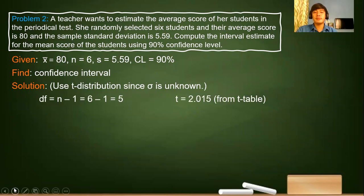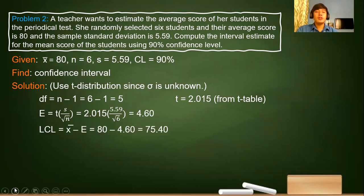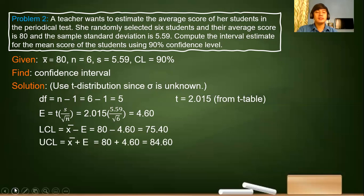For the given: point estimate 80, sample size 6, S equals 5.59. Substituting for the degrees of freedom: 6 minus 1 equals 5. Looking at the T table, we get the intersection of 5 and 90%, which gives a value of 2.015. For the margin of error, we substitute: T confidence coefficient 2.015 multiplied by 5.59 over the square root of 6 — the answer is 4.6. For the lower confidence limit, we subtract from the point estimate 80, giving 75.40. For the upper confidence limit, we add to 80, so 80 plus 4.60 equals 84.60.